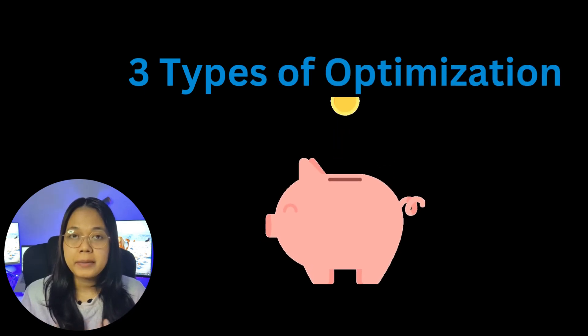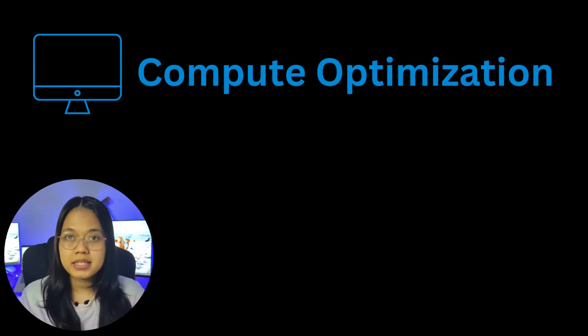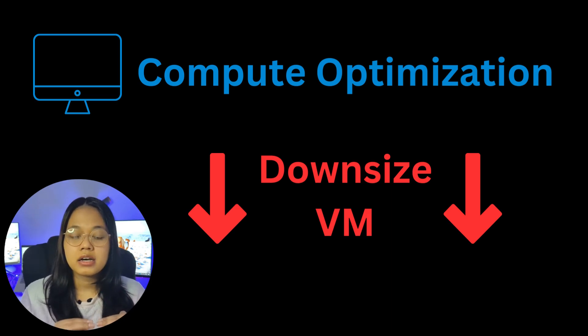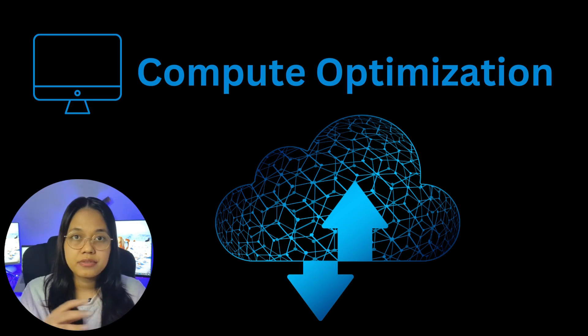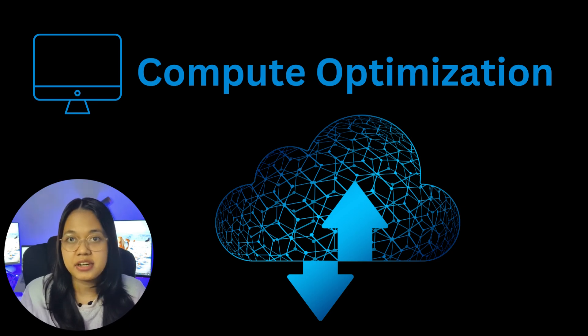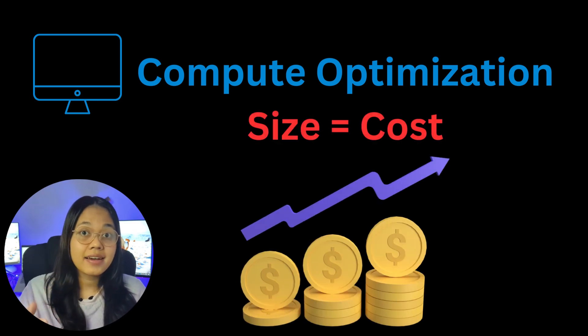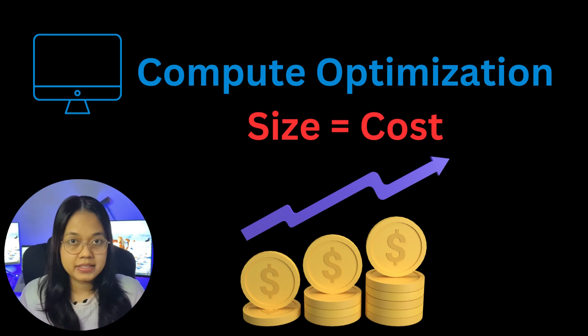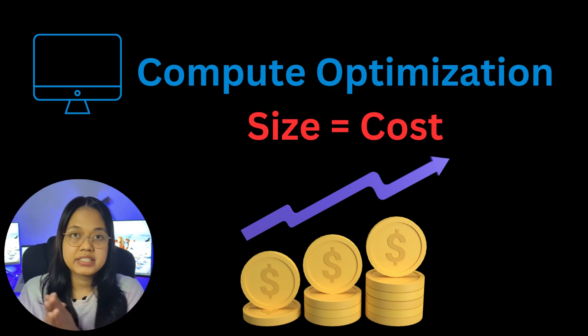To help them save some money, we applied three optimizations to their environment. The first one is compute optimization — this is to downsize their virtual servers to the correct size. Usually when they are migrated from on-premises into the cloud, the cloud engineer builds the virtual server at a maximum size to make sure the application runs smoothly without any disruption. But the higher the size, the higher the cost, so we analyzed all the virtual servers and applications, found the middle ground, and determined the correct size to apply for each server.